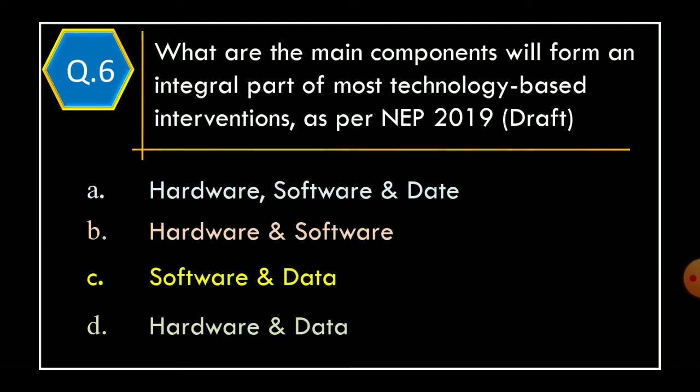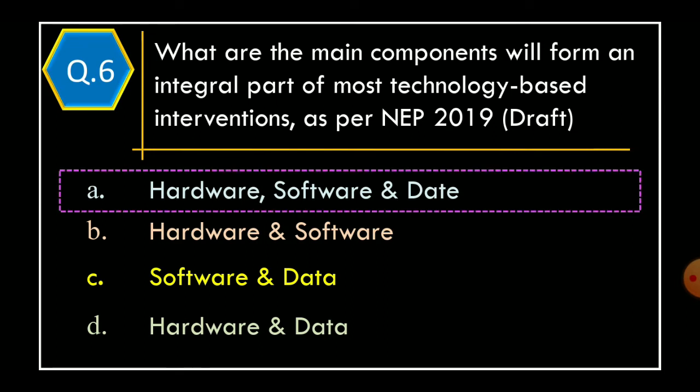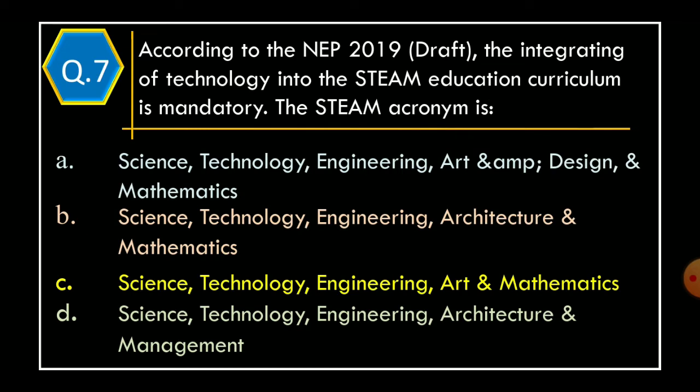Question 6. What are the main components that will form an integral part of most technology-based interventions as per NEP 2019 draft? Option A: Hardware, Software, and Data. Option B: Hardware and Software. Option C: Software and Data. Option D: Hardware and Data. The correct option is Option A: Hardware, Software, and Data.